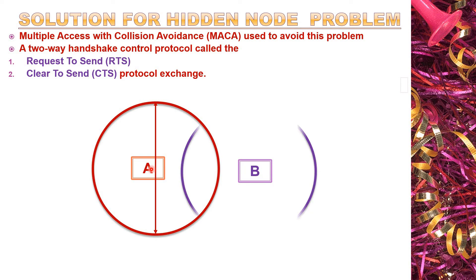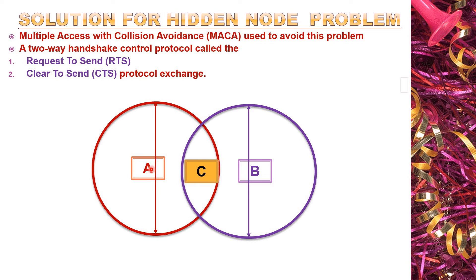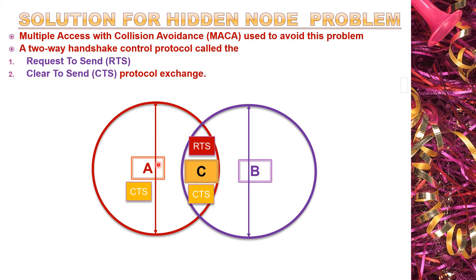Considering the same network: A is available with its coverage area, B is available with its coverage area, and C is within both coverage areas. Now A wants to communicate with C, so A generates an RTS packet and sends it to C. If C is idle, it accepts the request from node A, then C generates a Clear to Send acknowledgement and transmits it back to A. This CTS conversation is also heard by B, so B receives a copy of the CTS packet and recognizes that A and C are going to exchange data packets.